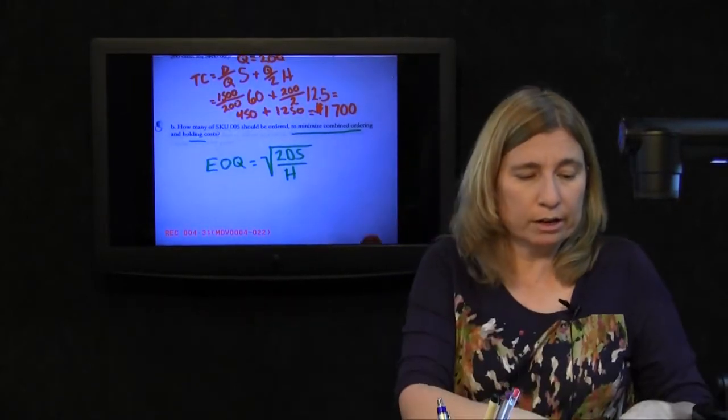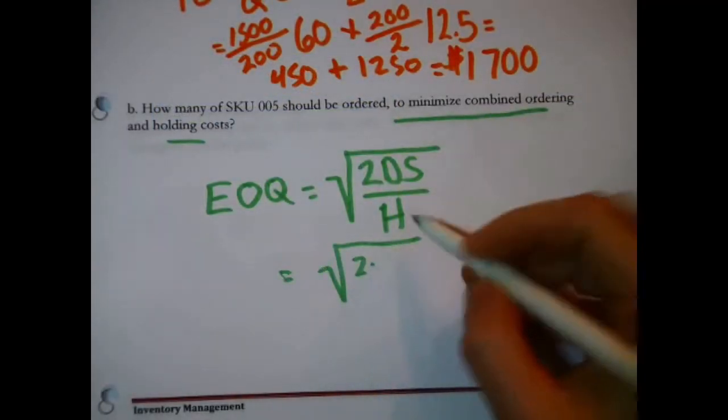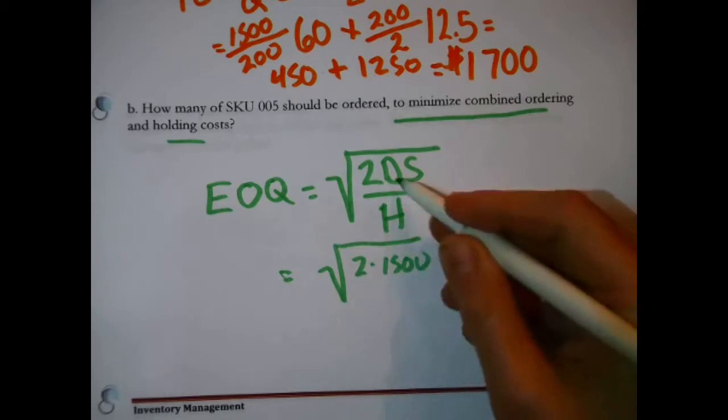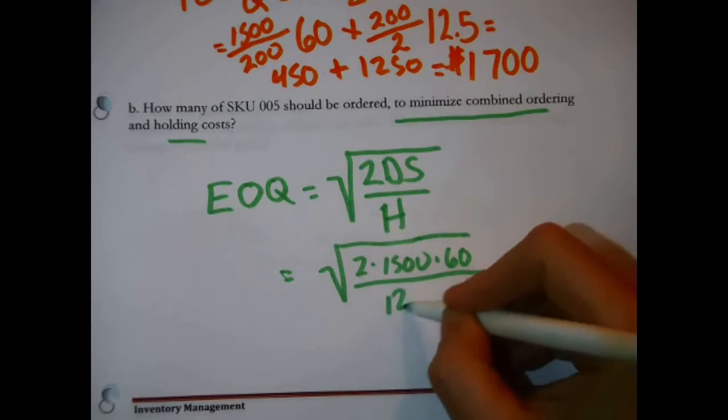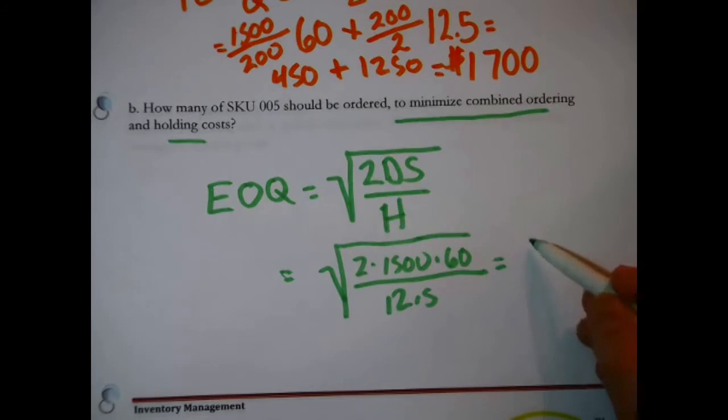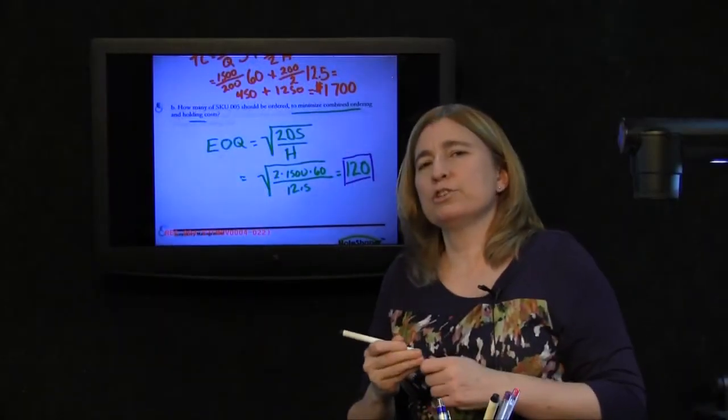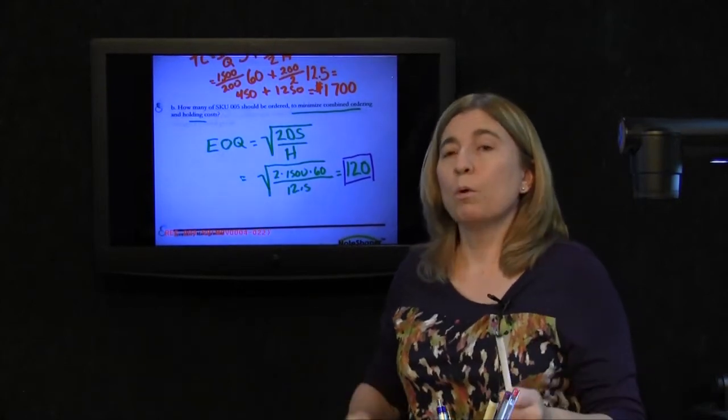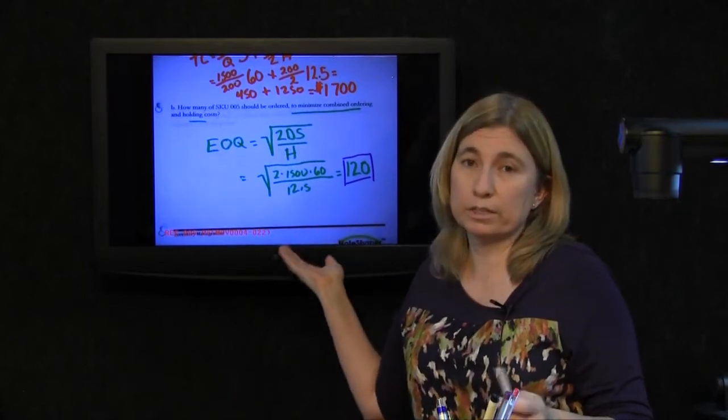So I did that, and I get, that's the square root of 2 times 1,500, that's our D, times 60, that's our S, divided by $12.50, because that's our H, and actually for once that comes out kind of nice and neat, I get 120. So if whoever manages this SKU005 wants to minimize ordering and holding costs over the course of a year, they should order these 120 at a time.